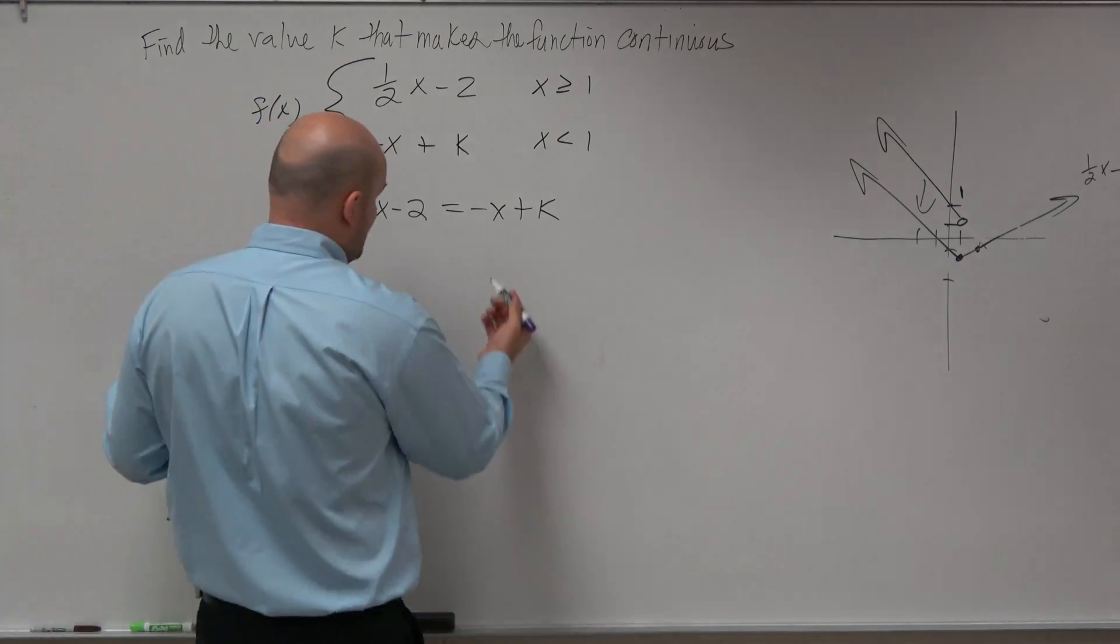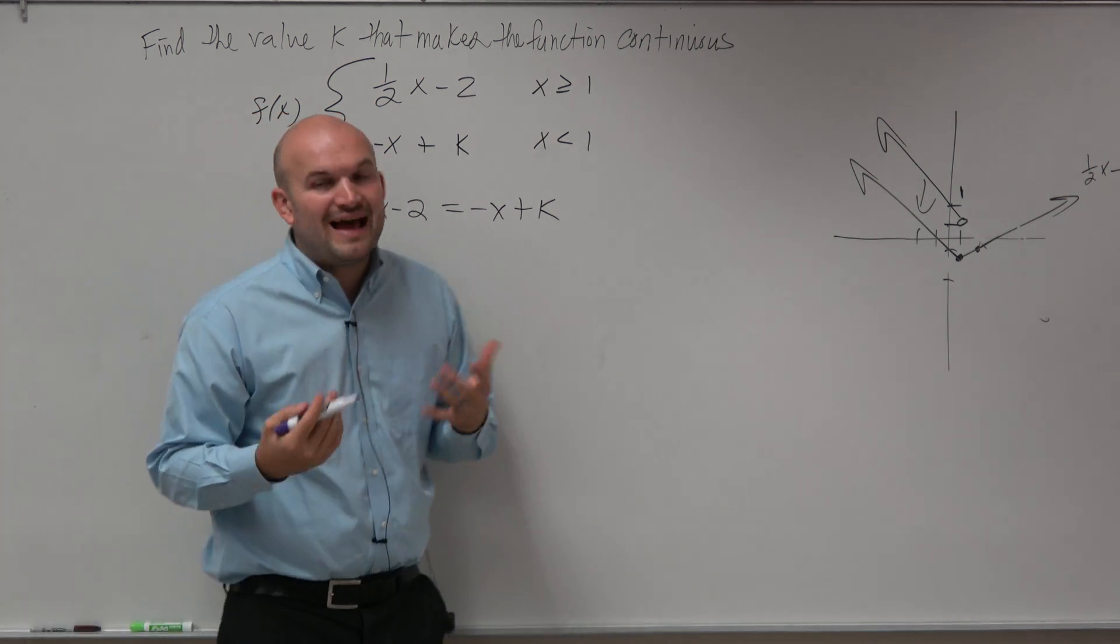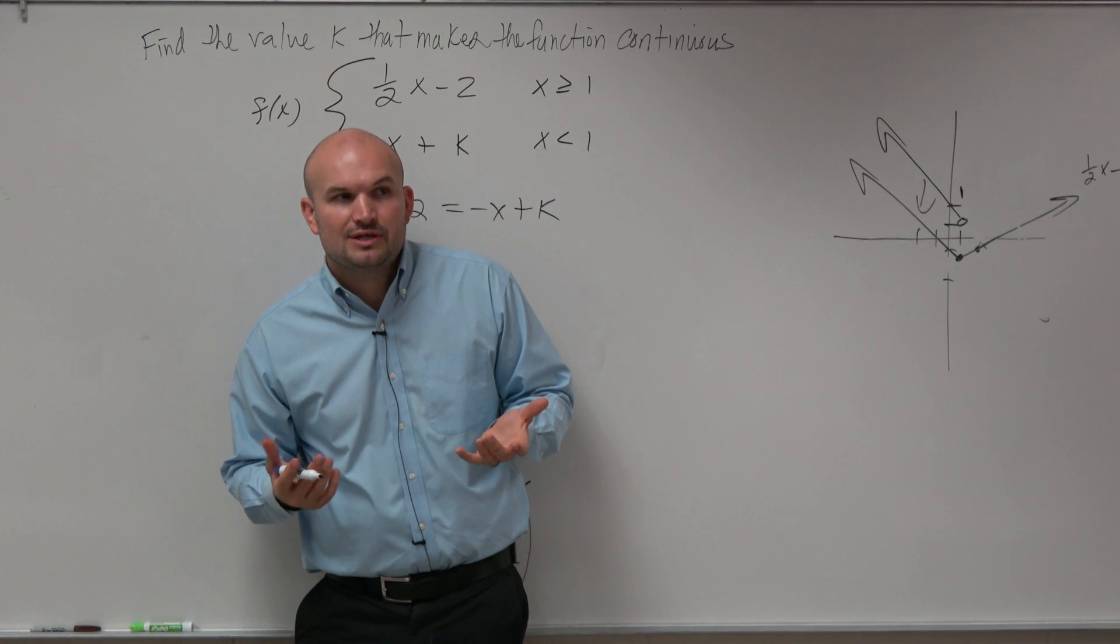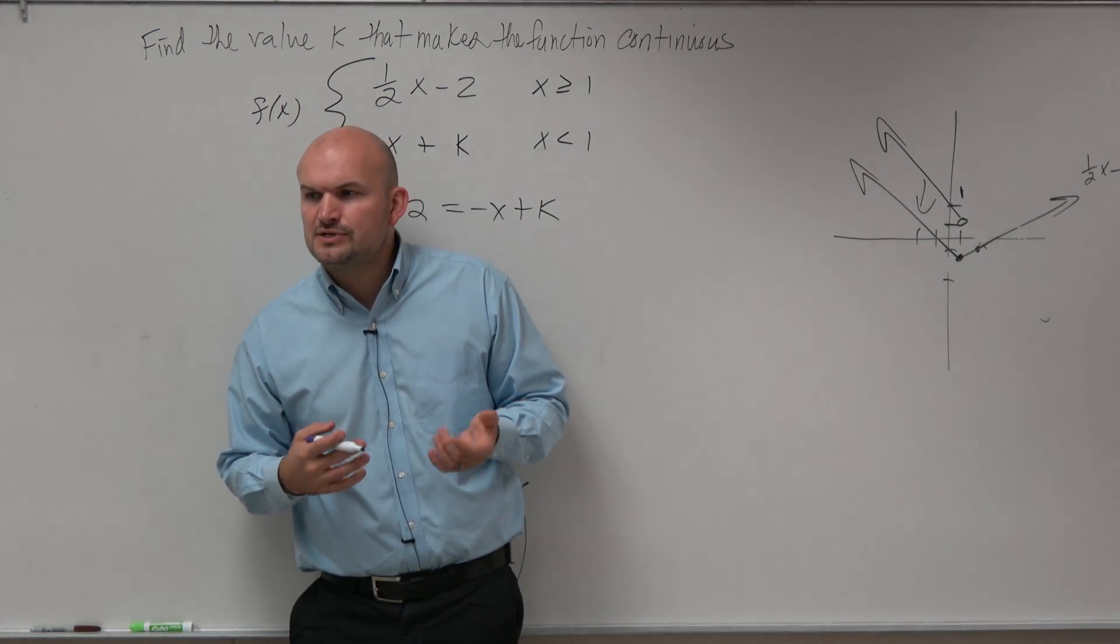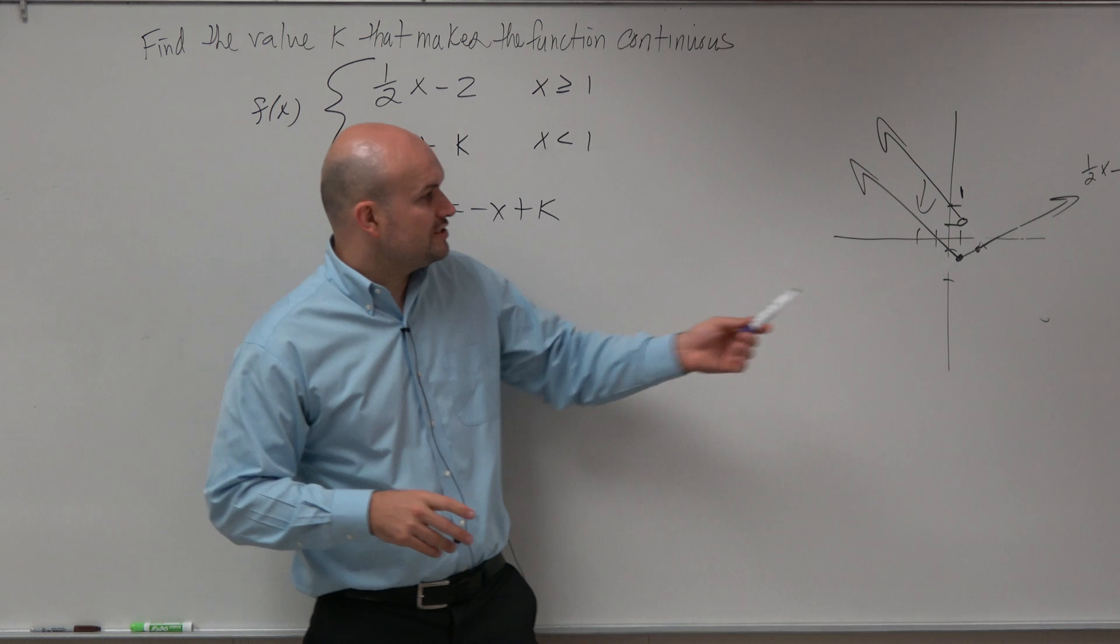Now that they have to be equal to each other, what value of x are we trying to make them equal to each other? At what value of x are we trying to make them equal to each other? Where are they trying to meet at?